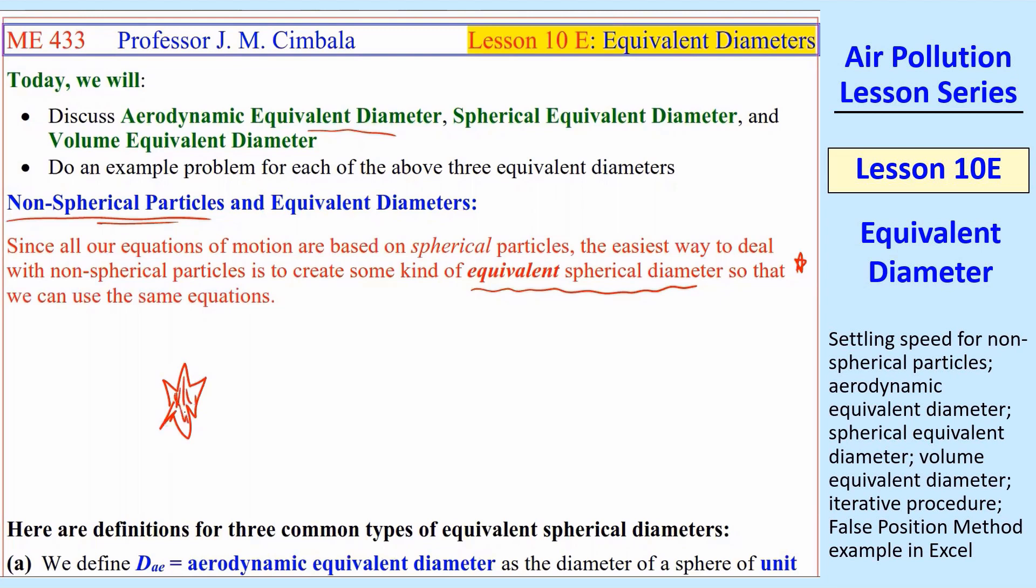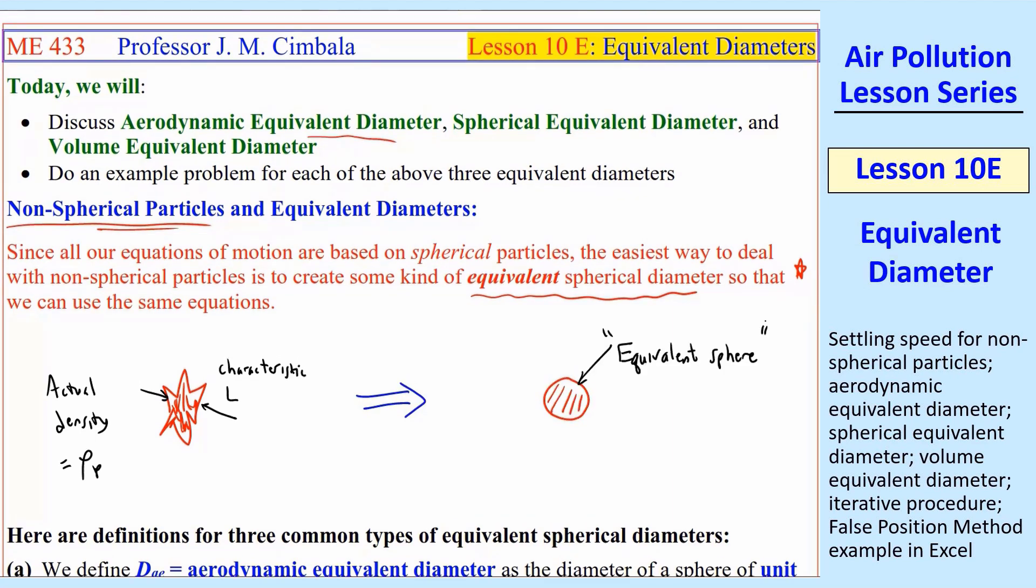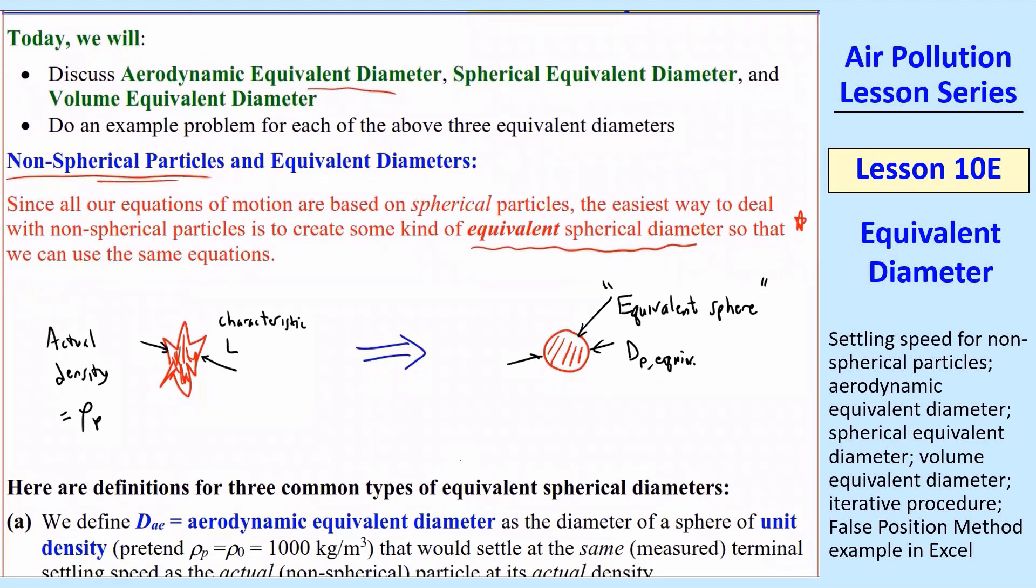Suppose we have some particle that has some weird shape, it's not spherical. The actual density of the particle is ρₚ, and there's some characteristic length scale. You could use that as a simple equivalent diameter, but it's not going to work very well. What we want to do is transform this into a spherical particle. We'll call that an equivalent sphere, and it has some diameter dₚ equivalent. It's not immediately obvious how we do that. In fact, there are three different common types of equivalent spherical diameters. Two of them are based on settling speed, and one of them is based on volume.